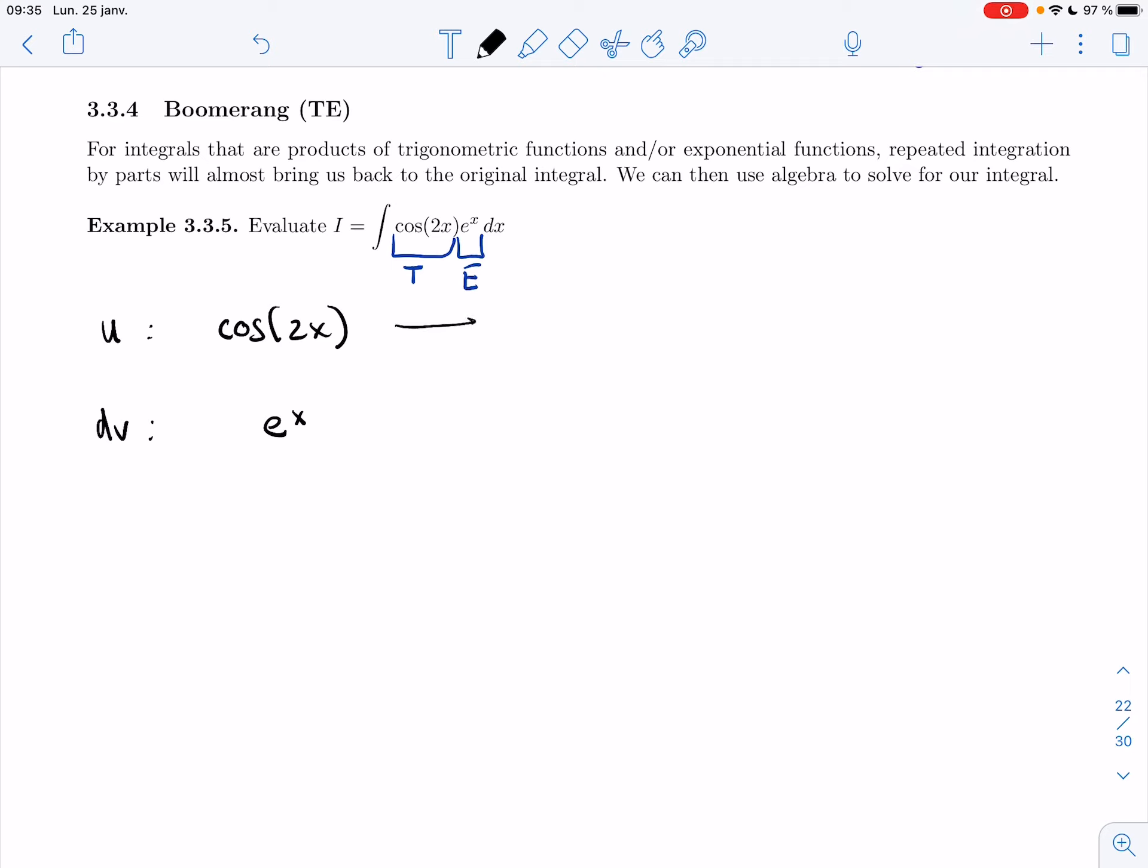All right, so I need to differentiate or derive this part. I need to integrate that part. This is easy. Derivative of cos is minus sine. And then because I have 2x inside, I'm going to get an extra two coming out.